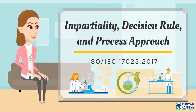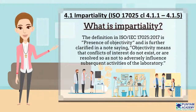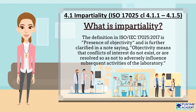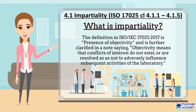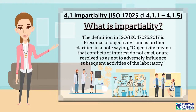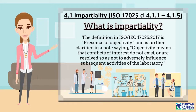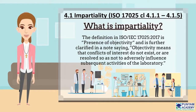First, we'll learn about impartiality — the ISO IEC 17025-2017 requirements for impartiality, and the steps for putting impartiality into practice. So, what is impartiality? The definition in ISO IEC 17025-2017 is 'presence of objectivity,' and is further clarified in a note saying objectivity means that conflicts of interest do not exist, or are resolved so as not to adversely influence subsequent activities of the laboratory.